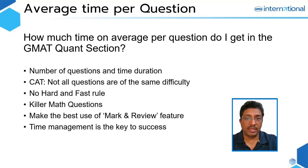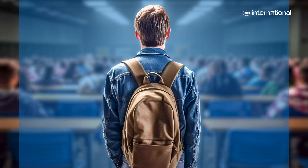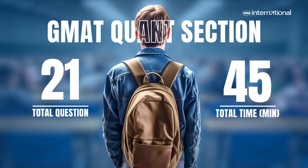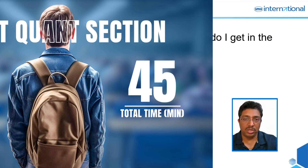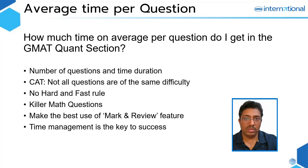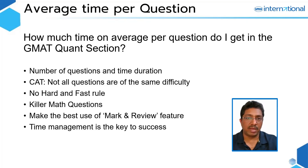There is no straight answer to this question as it appears, because in the quant section of GMAT there are 21 questions and the time duration is 45 minutes. When you divide 45 minutes by 21 questions, you clearly see that on average you have a little over two minutes — approximately 129 seconds per question.